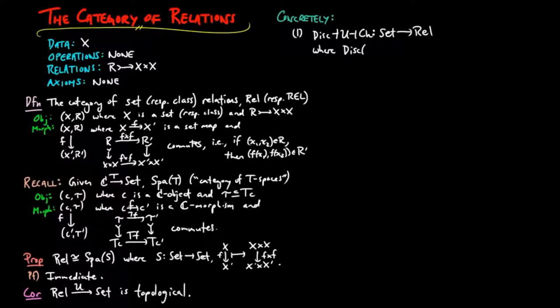The discrete relation on X is given by X and the empty set, and the chaotic relation on X is given by X and the entire binary product on X.